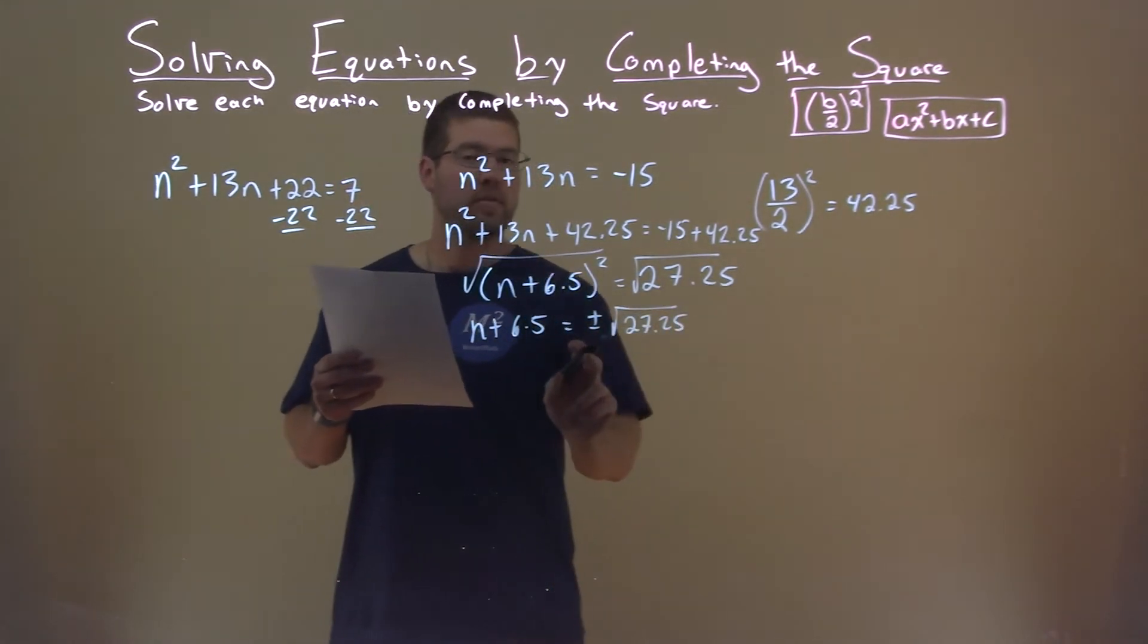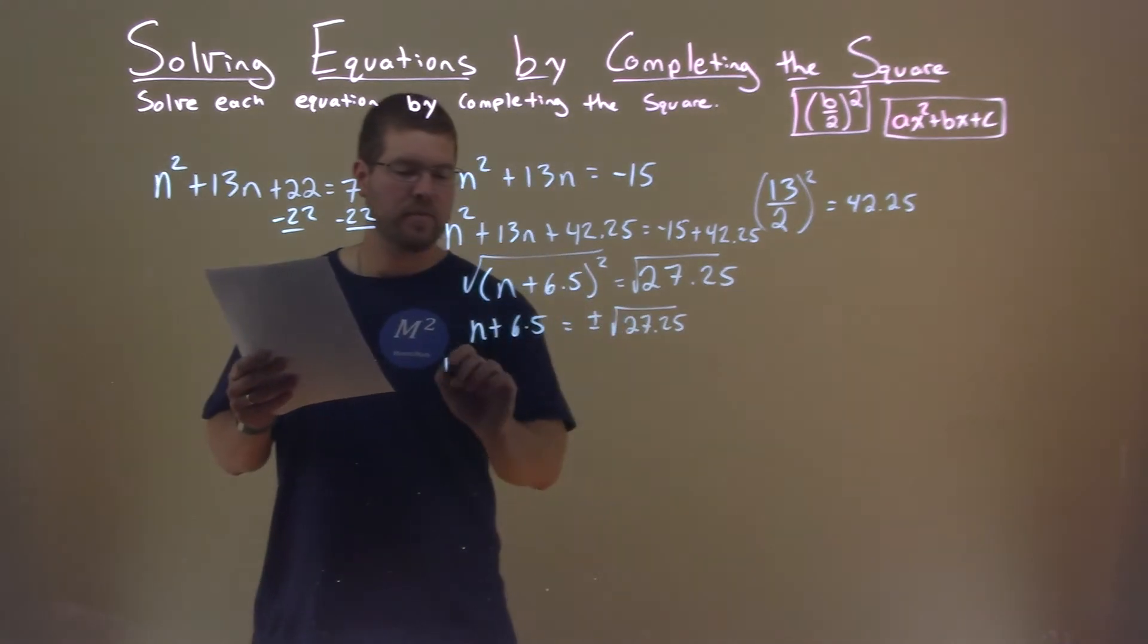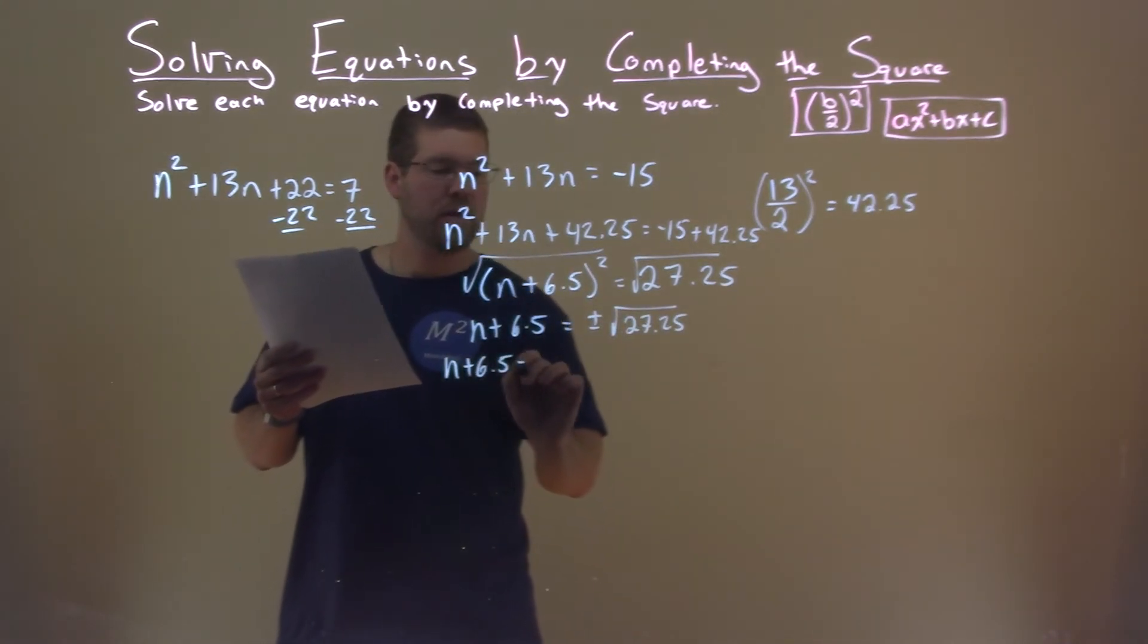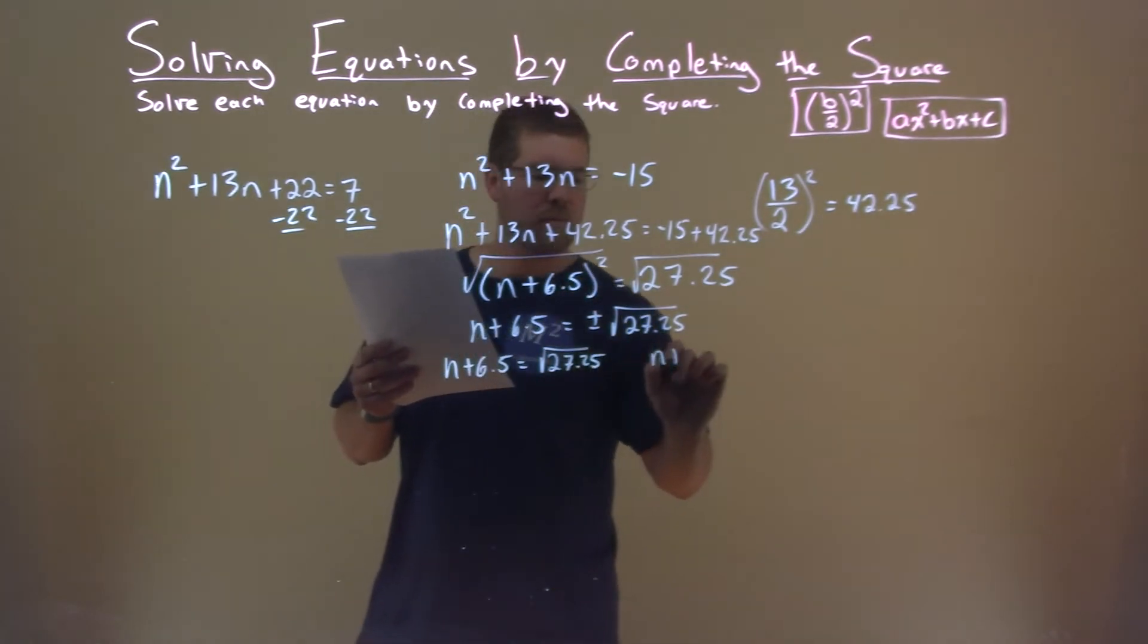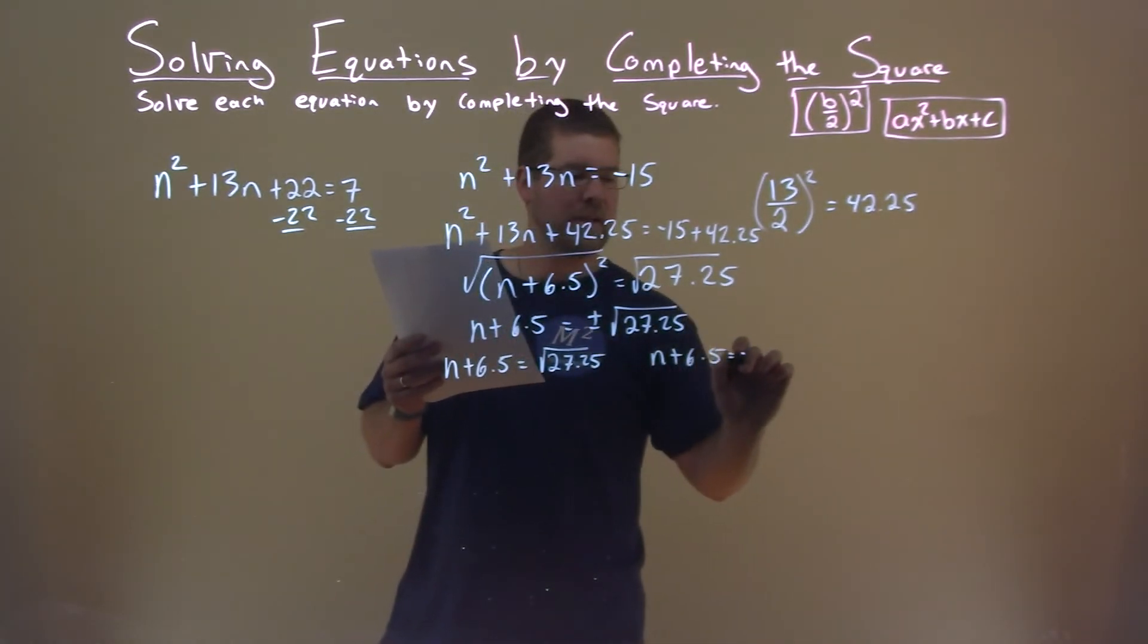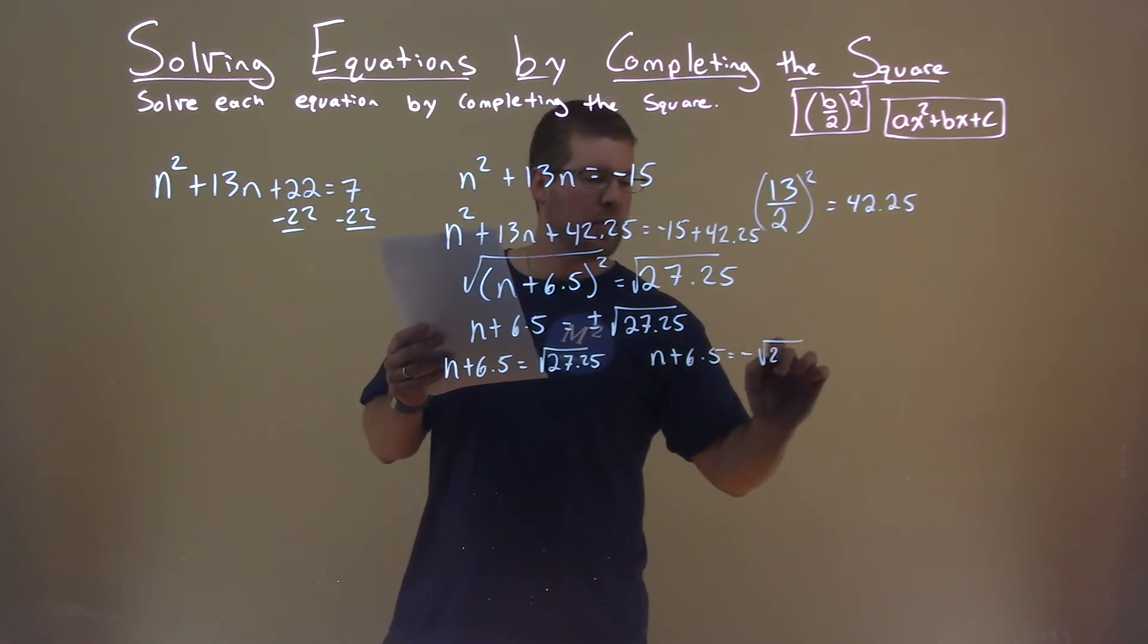Since this is plus or minus, we can separate it to two equations. n plus 6.5 equals a positive square root of 27.25, and n plus 6.5 equals a negative square root of 27.25.